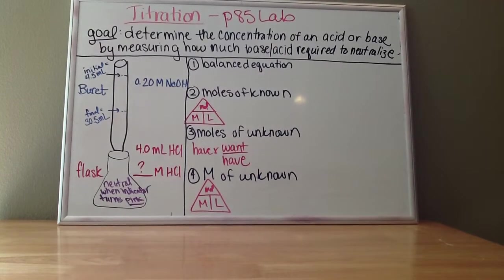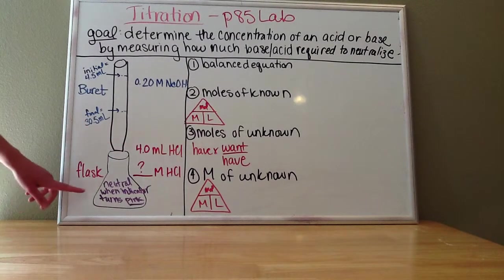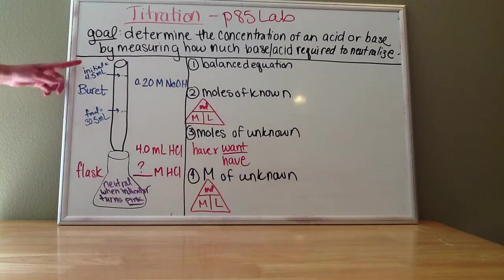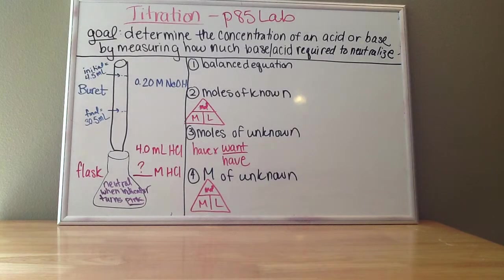In this case, our unknown is HCl, hydrochloric acid. That's what we put in the flask. So we put 4 mL of hydrochloric acid down here in the flask, and in our burette, we had our solution of known concentration, which was the base, 0.20 molar sodium hydroxide.